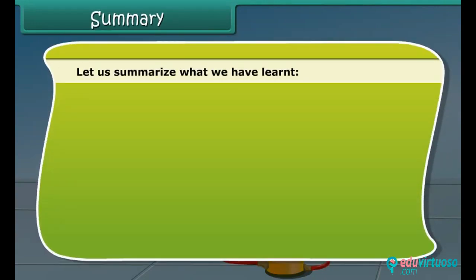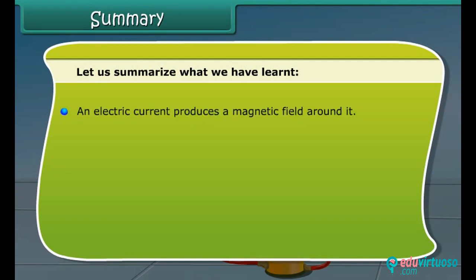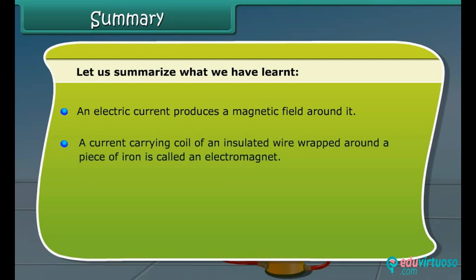Let us summarize what we have learned. An electric current produces a magnetic field around it. A current-carrying coil of insulated wire wrapped around a piece of iron is called an electromagnet. Electric bell functions on the principle of an electromagnet.